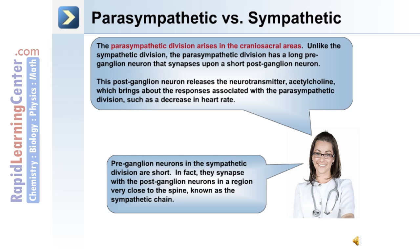Pre-ganglionic neurons in the sympathetic division are short. They synapse with the post-ganglionic neurons in a region very close to the spine known as the sympathetic chain.